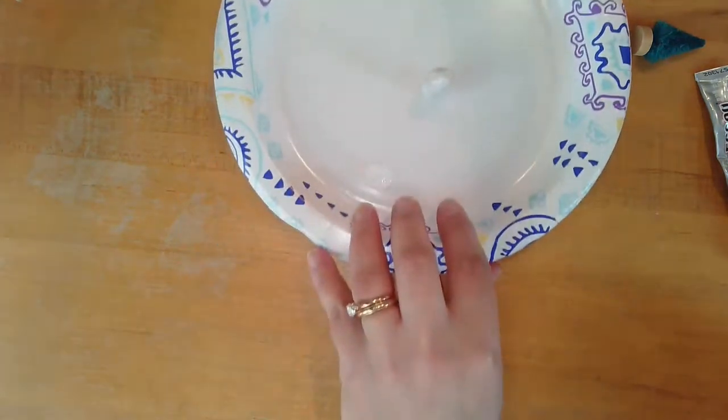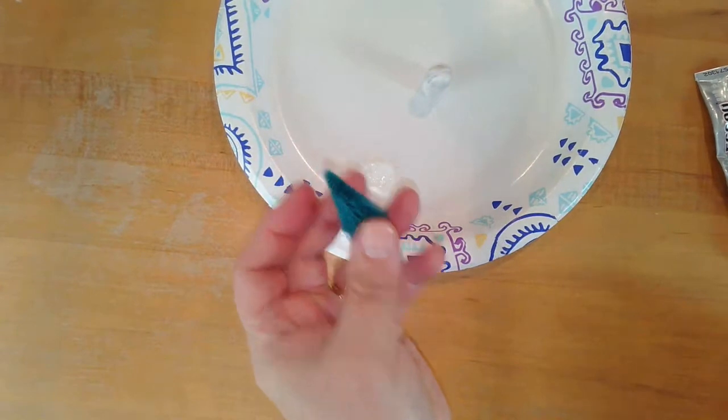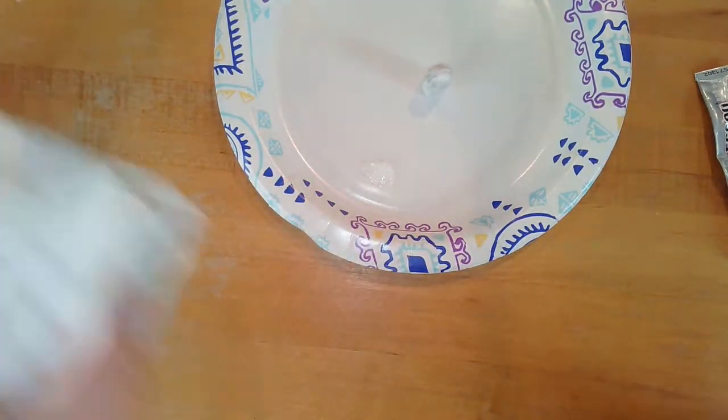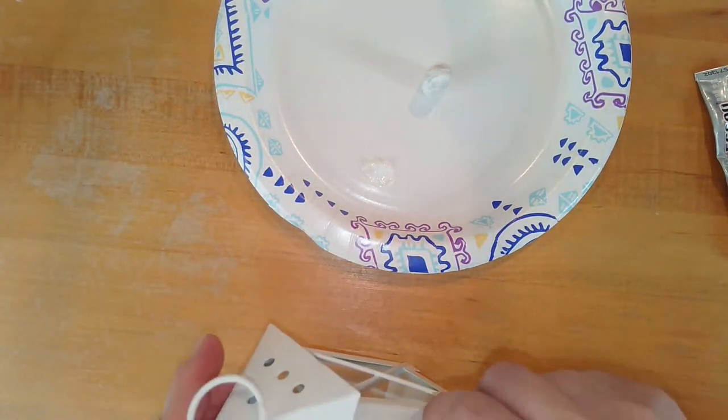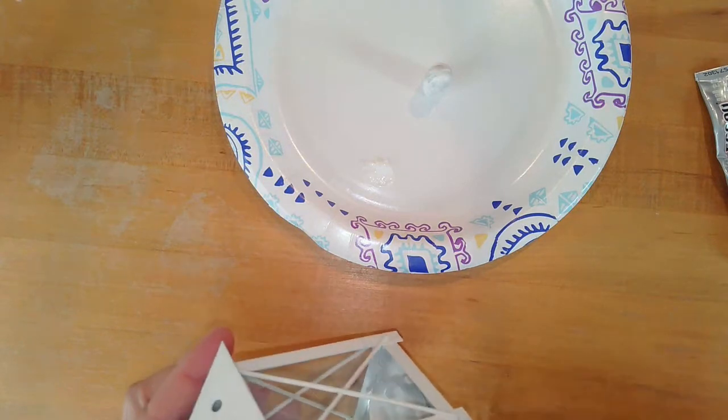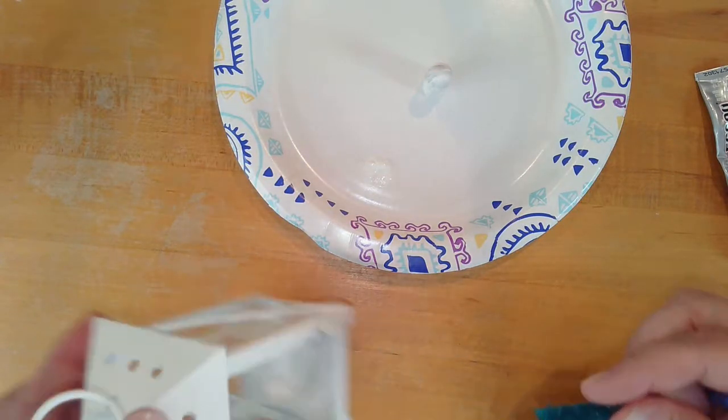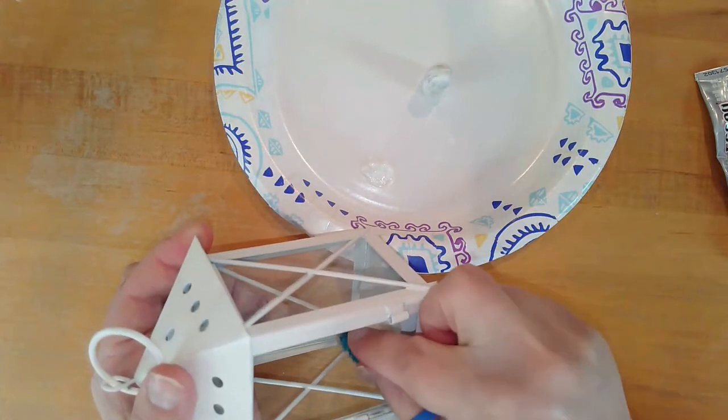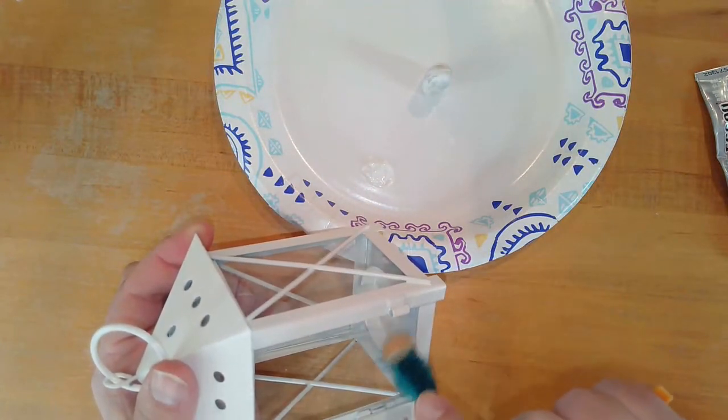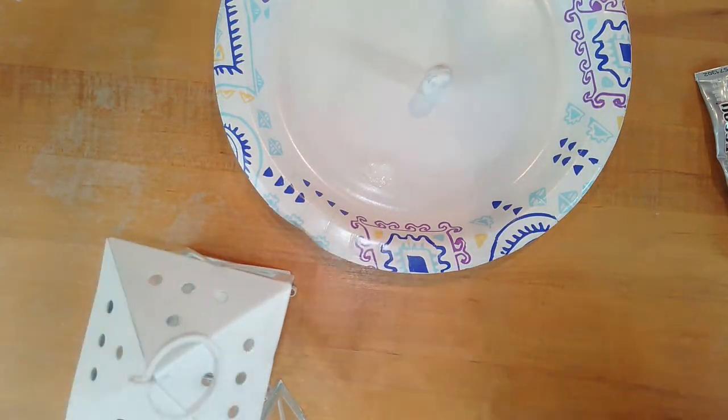I'm still letting my snowman dry, so while I'm waiting to do that, I'm going to glue my artificial tree into my lantern. I'm going to decide where I want it, what corner I want it to be in. I want it kind of in the back there because I'm going to have my snowman up front.